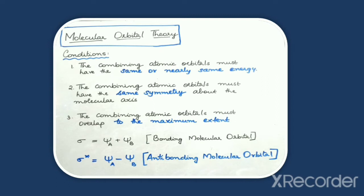Atomic orbitals will combine to give molecular orbitals. We know that an atomic orbital is represented by a wave function. So, how are the molecular orbitals formed? These are formed either by the addition of the wave functions corresponding to the atomic orbitals or by the subtraction of wave functions corresponding to the atomic orbitals. The addition of the wave functions results in the formation of a bonding molecular orbital.